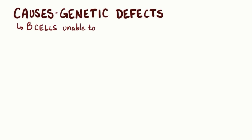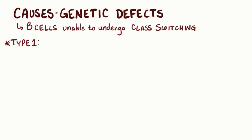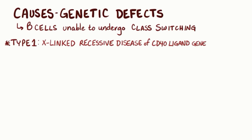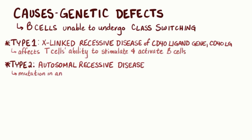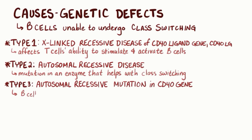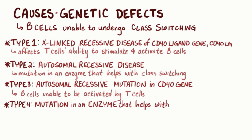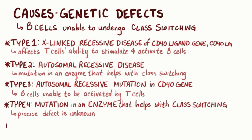Hyper-IgM syndrome can be caused by a variety of genetic defects, which makes the B cells unable to undergo class switching. There are several subtypes. The most common is type 1, which is an X-linked recessive disease of the CD40 ligand gene, otherwise known as CD40LG, which affects T cells' ability to stimulate B cells and activate them. Type 2 is an autosomal recessive disease in which there is a mutation in an enzyme that helps with class switching in the B cells. Type 3 is an autosomal recessive mutation in the CD40 gene affecting B cells, so that they are unable to be activated by T cells. Type 4 is again thought to be related to a mutation in an enzyme that helps with class switching in the B cells, but the exact defect here is unknown. Lastly, there's type 5, which is once again caused by a mutation in an enzyme involved in B cell class switching.